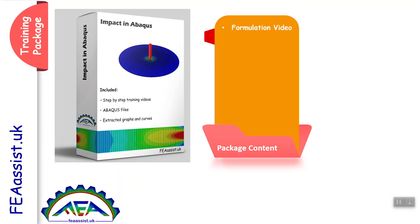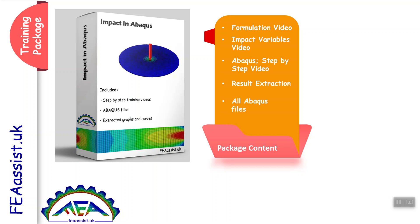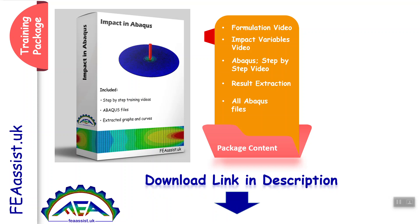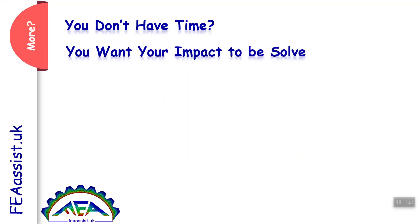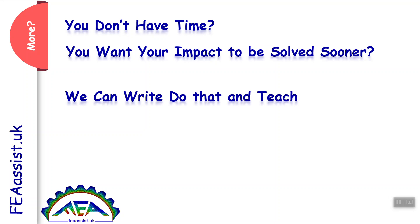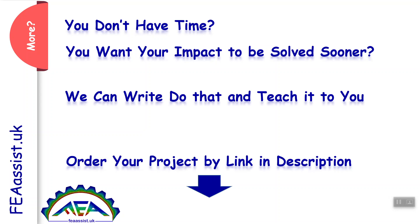In this package, the formulation of impact is explained. Impact variables are explained. The Abacus model is explained step by step. Result extraction from impact is covered. All Abacus files are included in this package. You can download this package by the link in description or directly go to feassist.uk. If you want more and don't have time, we can write it, do it for you, test it, and teach it to you by online meeting and videos. You can order your project by the link in description or go directly to feassist.uk.